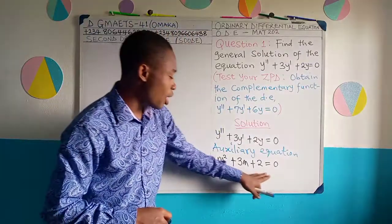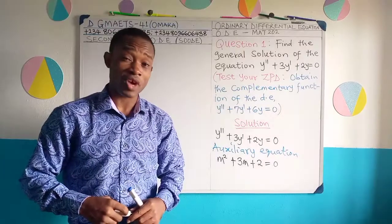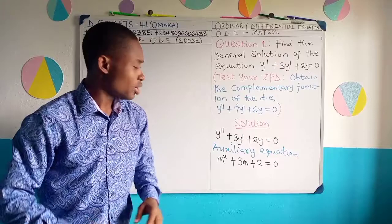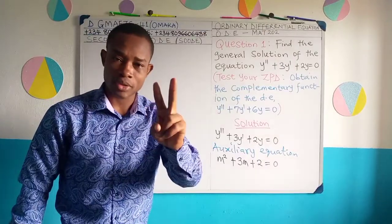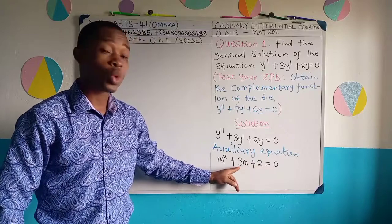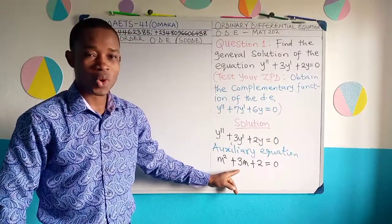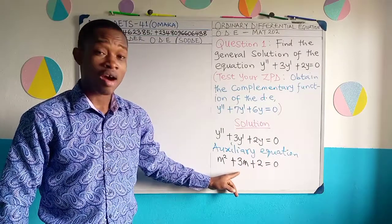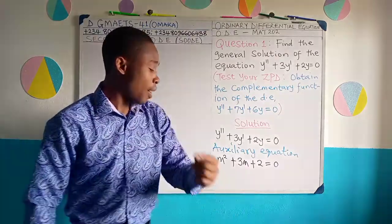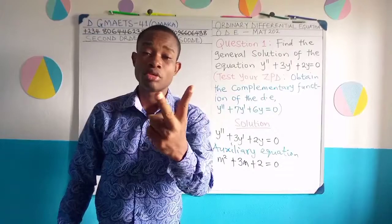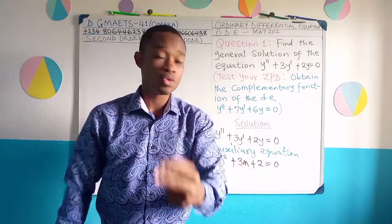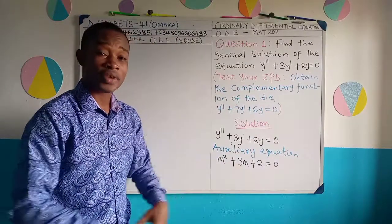Can we factorize this quadratic equation? It is factorizable. I can get two numbers which are factors of 2, and if I add them I would get 3. This requires a good knowledge of multiplication tables. The numbers are 1 and 2. If I multiply 1 and 2, I get plus 2. And if I add 1 plus 2, I get plus 3.